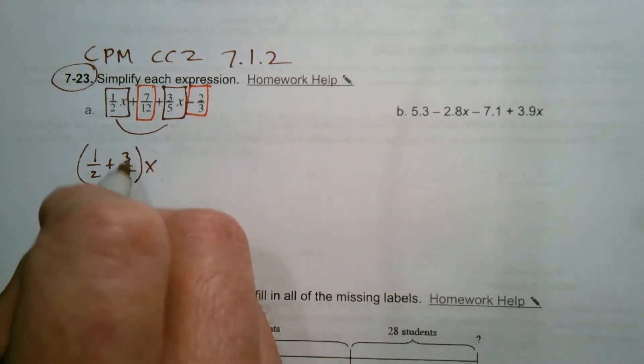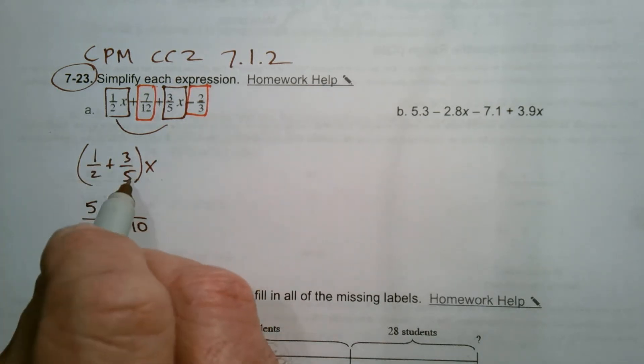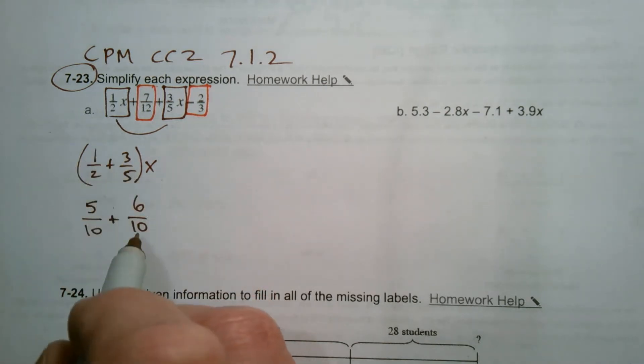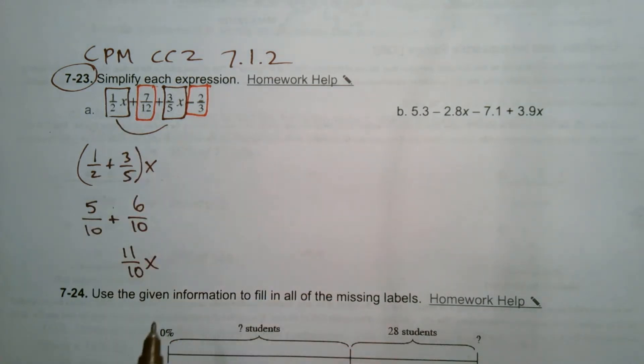So 1.5 and 3.5. I need a common denominator in order to add fractions, and my denominator will be tenths. So I can take 1.5 and make it 5 tenths, 3 fifths as tenths, or 6 tenths. So I multiply top and bottom by 2 to get this 6 tenths. So now I have 5 tenths plus 6 tenths, so that's 11 tenths x. So my new coefficient is just 11 tenths for that x.